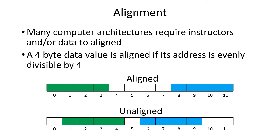ARM requires that operands be aligned. Your Intel doesn't, but your IBM 360, 370, Z-series systems, and ARM all require that when you're loading a 4-byte value, it must be on an address evenly divisible by 4. In the diagram here, address 0 and address 8 are evenly divisible by 4, but address 1 and address 6 are not. On the Intel system you can pick up those unaligned values — they are slower, but it still works — whereas on the ARM processor it won't work unless the addresses are evenly divisible by 4.